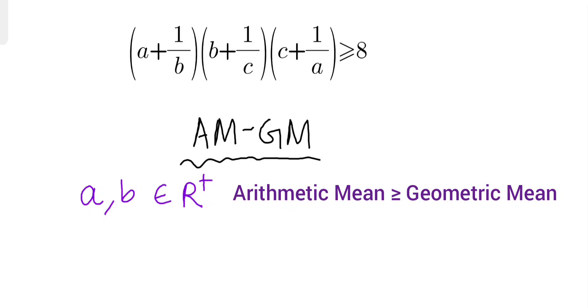quadratic mean. What is this? It means a plus b by 2 will be greater than or equals to square root of a b. So we'll use this technique to prove the above statement. So let's consider this is